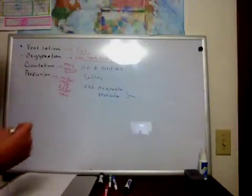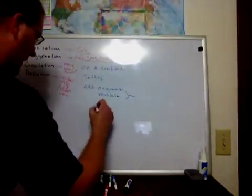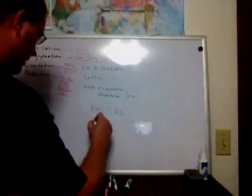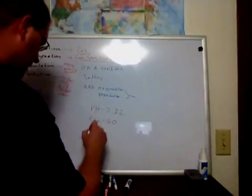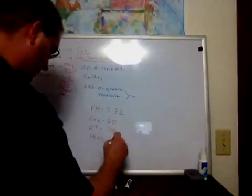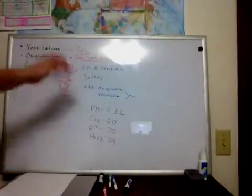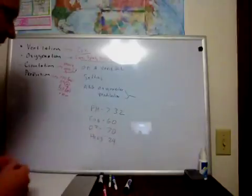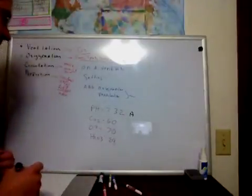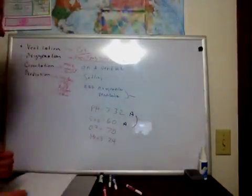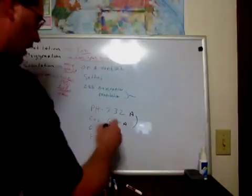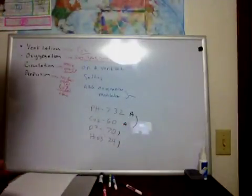Let me go ahead and give you a scenario. I have a patient on a ventilator with the following ABG: pH of 7.32, CO2 of 60, O2 of 70, bicarb of 24. The settings are not really relevant. You can easily identify — the first thing I always look at is the pH. The pH is acidotic, the CO2 is acidotic, so my underlying problem is respiratory acidosis. My bicarb is normal, so it's an uncompensated respiratory acidosis, and I do have a low oxygen — a concomitant hypoxemia, mild hypoxemia.